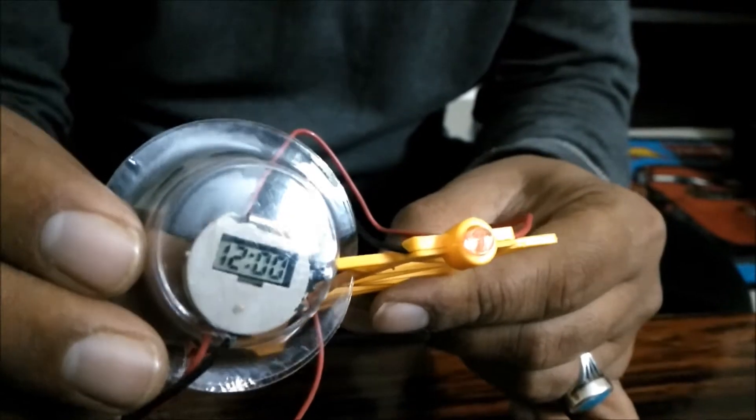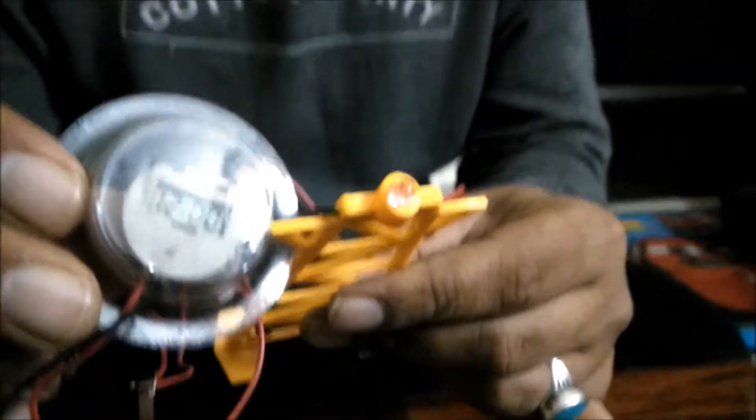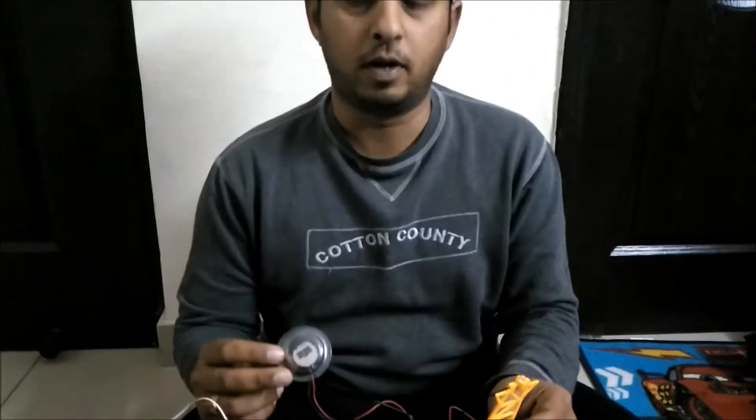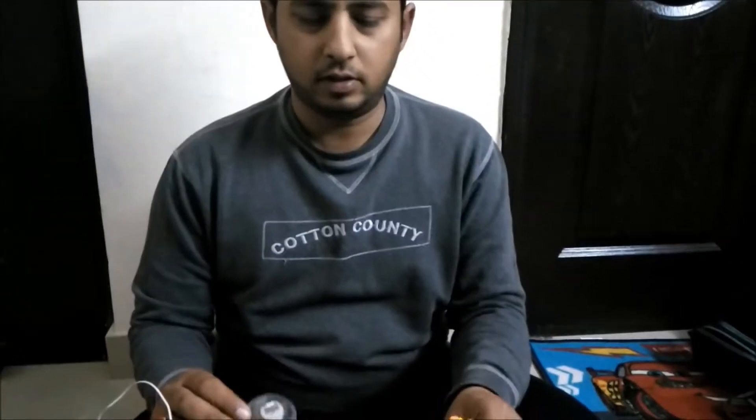So this is our final phase of potato bio battery. So now you know how to generate electricity from bio batteries. Earlier we have tried lemon, then we have tried vinegar with water and then we have tried with the potato.